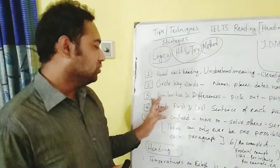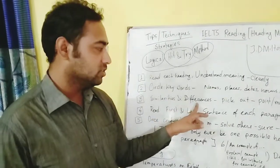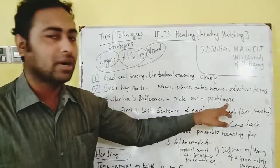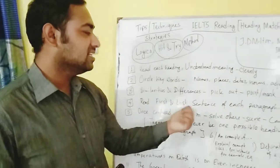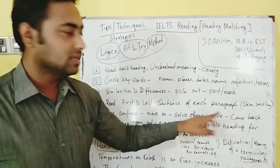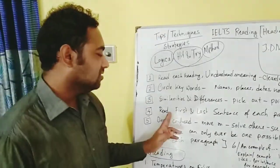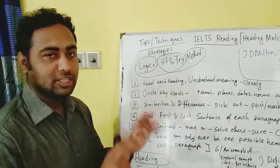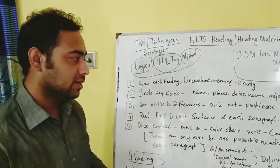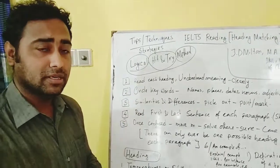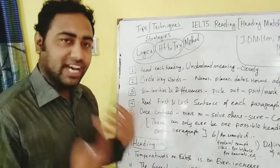Number three: find out the similarities, dissimilarities, or differences and mark them. Number four: read the first and last sentence of each paragraph — this will save your time as you skim through. If it is a large paragraph, read at least the first two lines and the last two lines, and you'll understand the main idea of it.